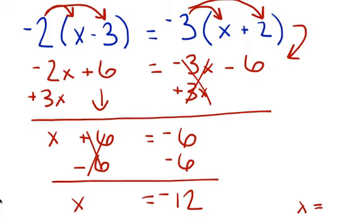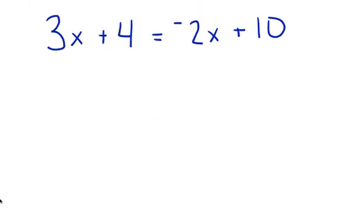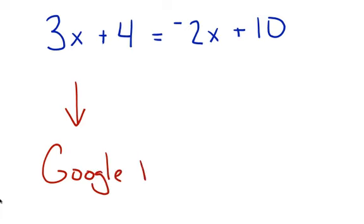Alright, last problem — I want you guys to solve this one by yourselves. Look below for a Google form, fill it out, and put in your answer: x equals whatever it happens to equal. Work it out on your paper first. Go back and look it over if you have any questions — this is straightforward, just go step by step. You guys are going to be great at this. Have a good night, we'll see you in class tomorrow. Be ready to work!